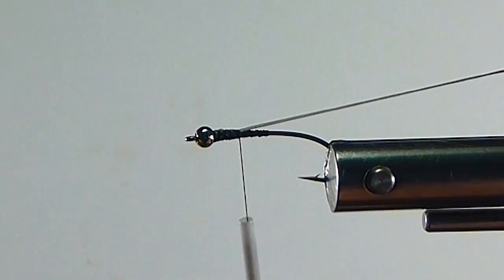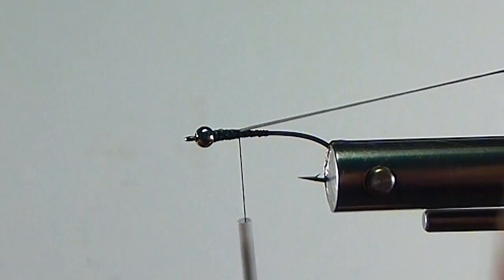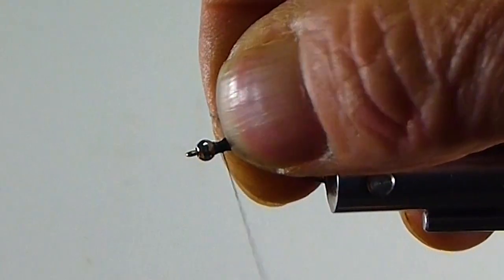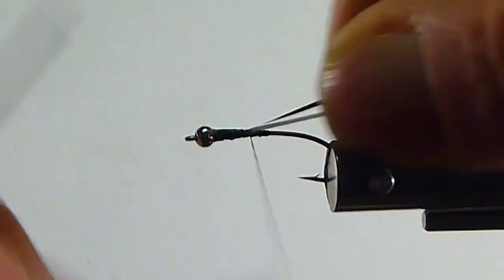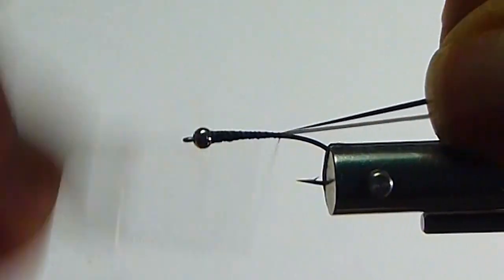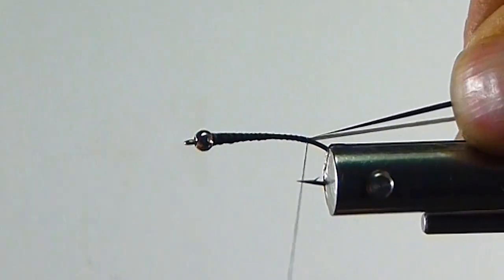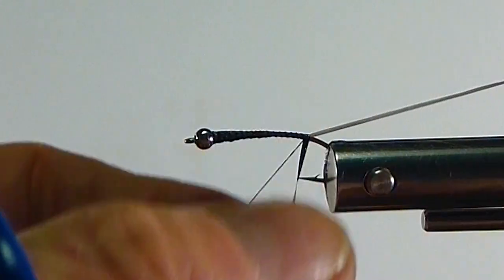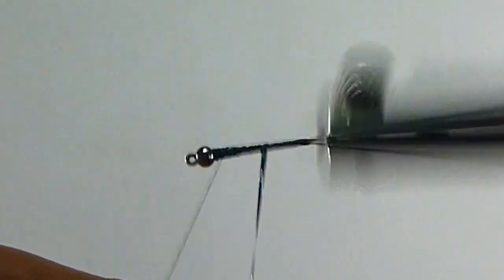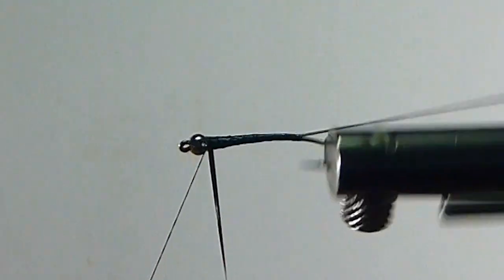Then I will bring in some of the holographic tinsel. Tie that along the side. And as I go back, my body's getting really nice and thin at the rear. Got a nice taper on it. And then I'll just put the underbody in on the black holographic tinsel.